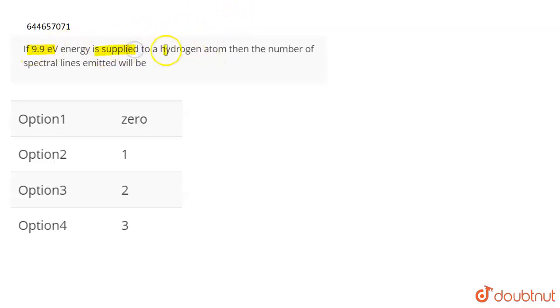The question is: if 9.9 electron volt energy is supplied to a hydrogen atom, then the number of spectral lines emitted will be?